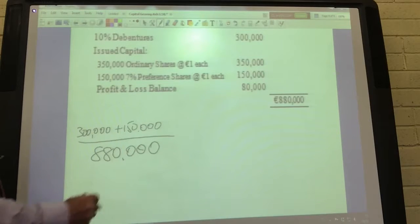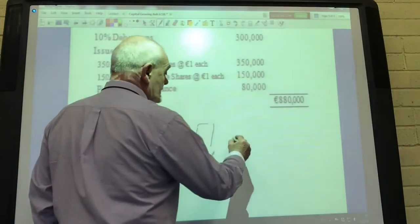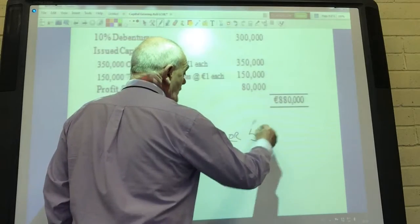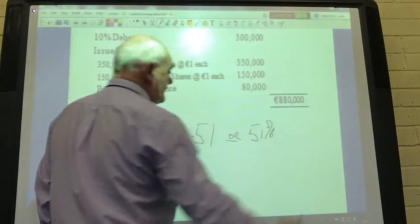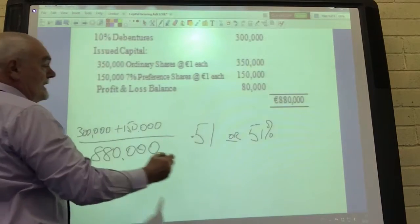Of the 880,000 euro, 450,000 of that is coming from fixed return capital and that gives us an answer of 0.51 or 51 percent. More than half of Ash Limited capital employed is coming from fixed return capital.